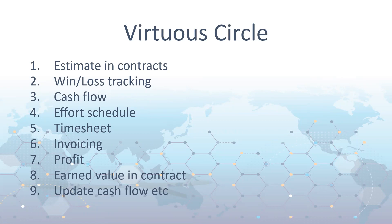We can compare actuals to the original budget in the contract and start to get an idea of profitability. Those timesheet hours also come into the new invoicing sub-nav and we can review those hours and work out what we can bill. Depending on the contract type — if it's milestone claiming, we can look at comments against the contract deliverable; if it's a schedule of rates, we can base it off time spent. It's all integrated into one screen.